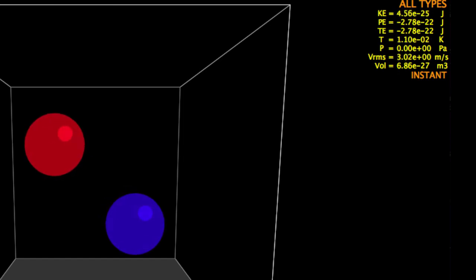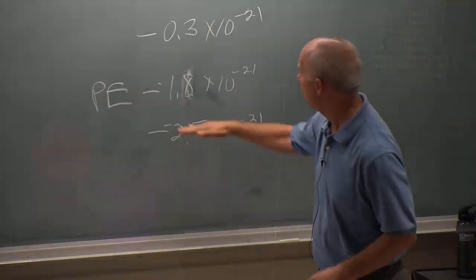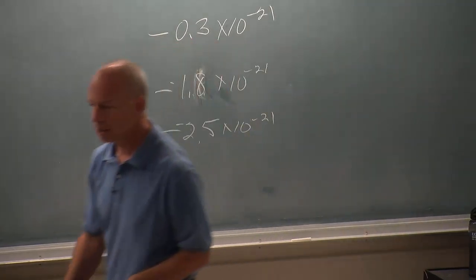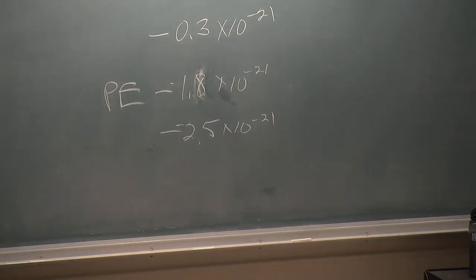So that's 0.3 times 10 to the minus 21. So the potential energy is now oscillating over a wider range. So the average potential energy has gone up also.